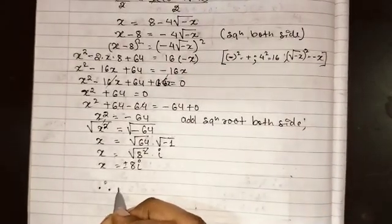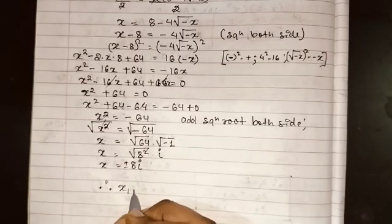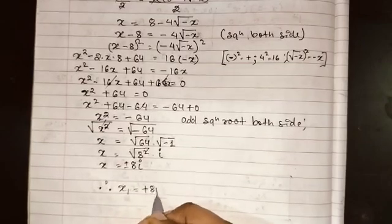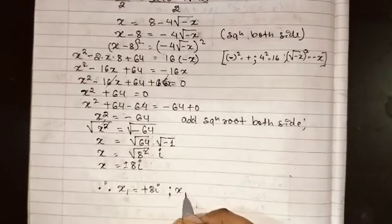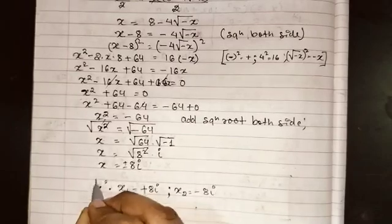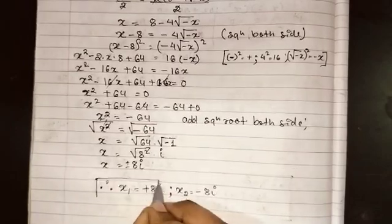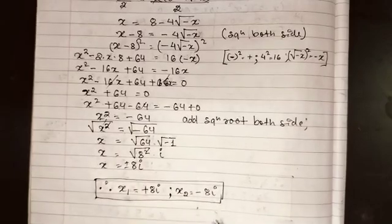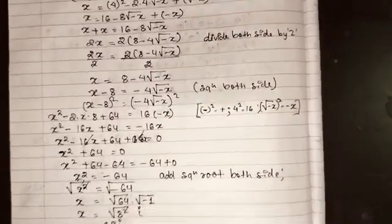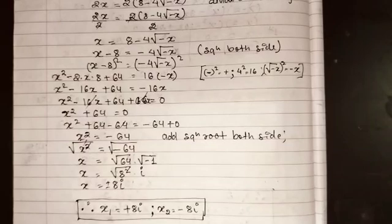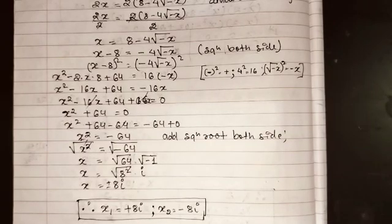Therefore there are two values of x: x₁ = +8i and x₂ = -8i. These are our two values of x. Hope you liked this video. If you like this video, please subscribe to my channel and stay tuned. Bye bye, take care.